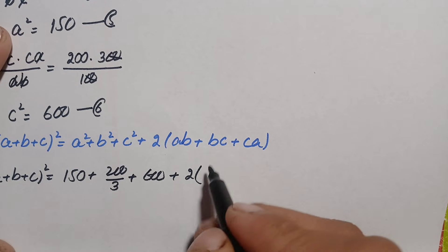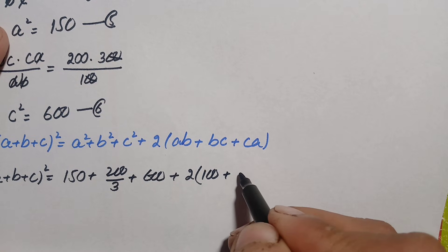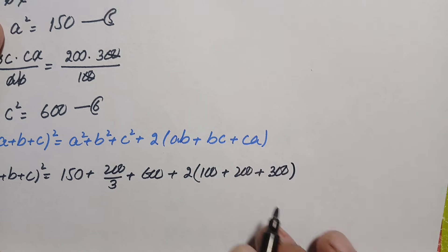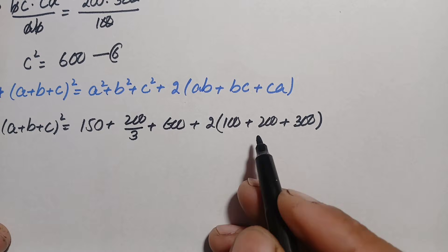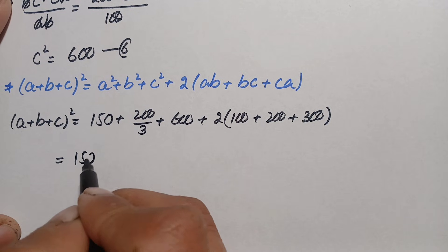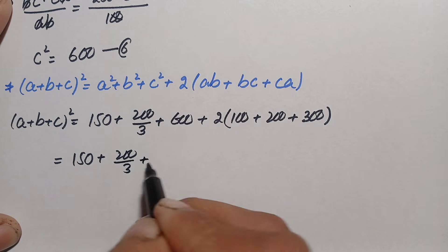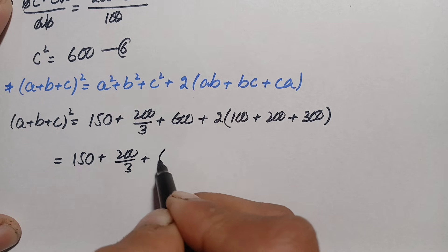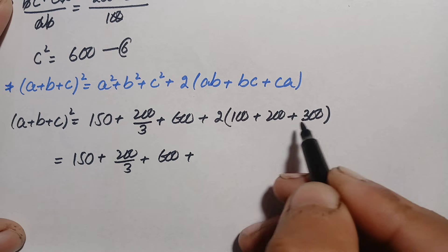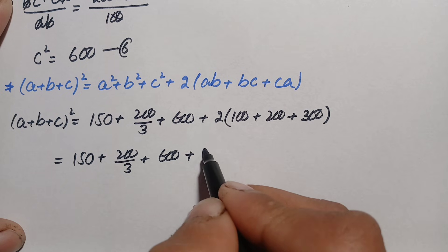Substituting: (a + b + c)² = 150 + 200/3 + 600 + 2 times (100 + 200 + 300). Now 100 plus 200 is 300, plus 300 is 600, and 600 times 2 is 1200.